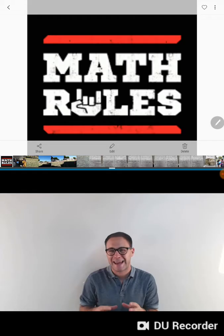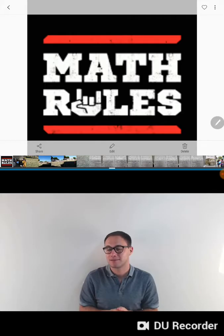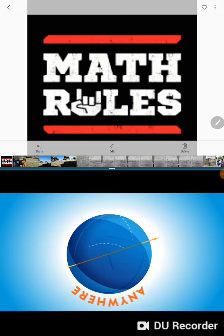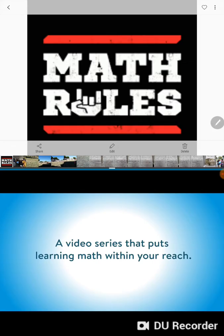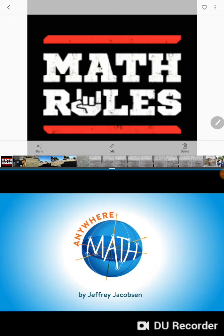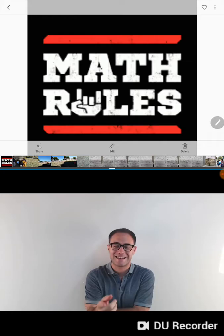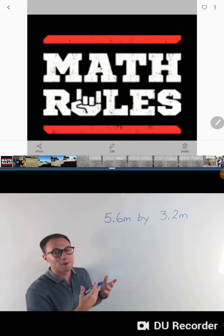Your wall is 5.6 meters by 3.2 meters. A small can of paint will cover about 20 square meters. Do you have enough paint to paint your wall? Welcome to Math, I'm Jeff Jacobson, and today we're going to talk about multiplying decimals.